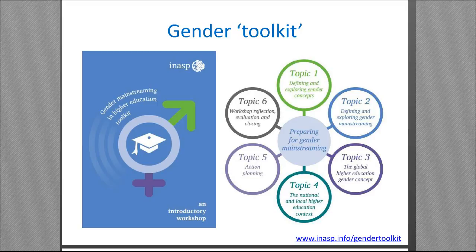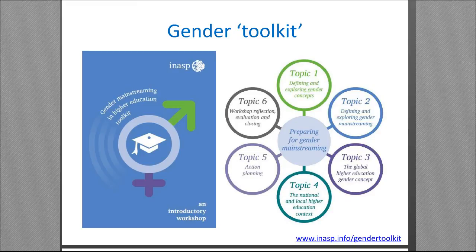Out of our work with the University of Dodoma we produced a gender toolkit — available at inasp.info/gender-toolkit. It has six modules covering gender mainstreaming, the country context, and setting an action plan. It includes a full five-day workshop program with activities to discuss issues affecting women in your institution, and a template to set an action plan — useful if your institution doesn't have a gender policy.